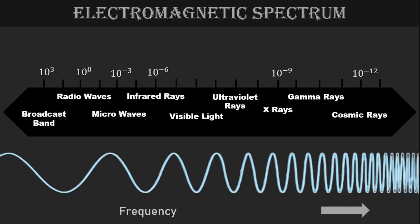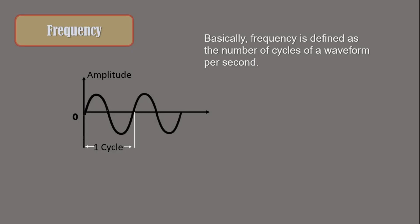If we move from the left to right, frequency will increase and wavelength of the waves will decrease. Basically, frequency is defined as the number of cycles of the waveform per second.